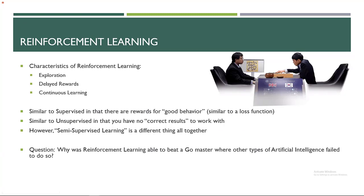Why was reinforcement learning able to beat the Go master? The AlphaGo movie is free on YouTube — it's excellent and absolutely worth watching, even with your family. It's a documentary but very exciting, and I can't tell you much without spoilers. If you don't know what the outcome is, it's going to be particularly tense. It's the showdown between Lee Sedol, the world Go champion, playing AlphaGo. They did five matches against each other — I already kind of spoiled that AlphaGo did manage to beat him.